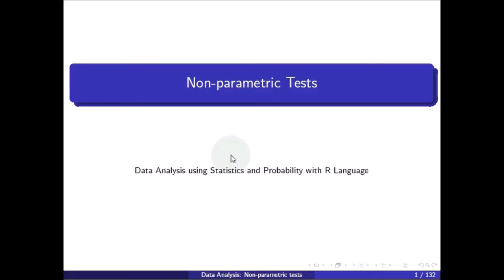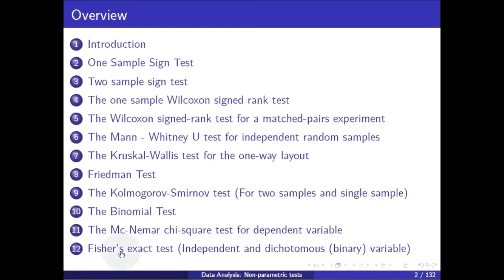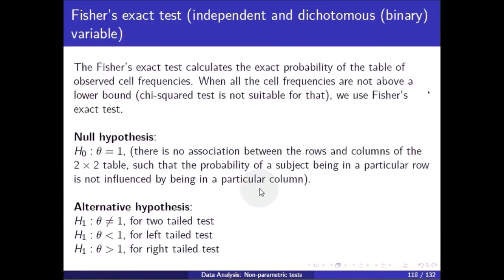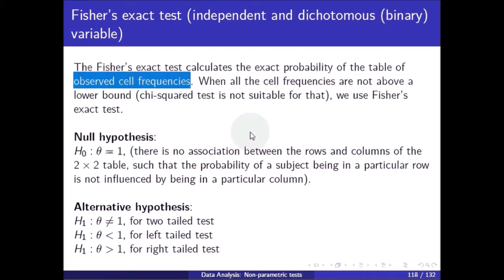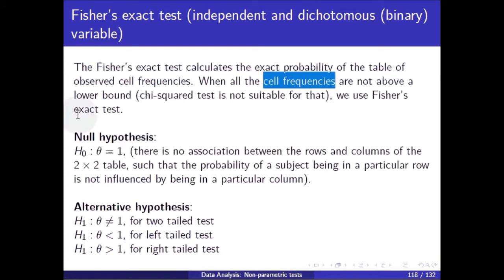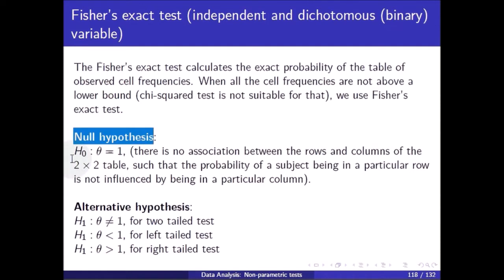In this video we'll talk about Fisher's exact test. The Fisher's exact test calculates the exact probability of the table of observed cell frequencies when all the cell frequencies are not above a lower bound, we use Fisher's exact test. The null hypothesis is theta equal to 1, meaning there is no association between the rows and columns of the two-by-two table. The alternative hypothesis: theta not equal to 1 for two-tail test, theta less than 1 for left-tail test, theta greater than 1 for right-tail test.